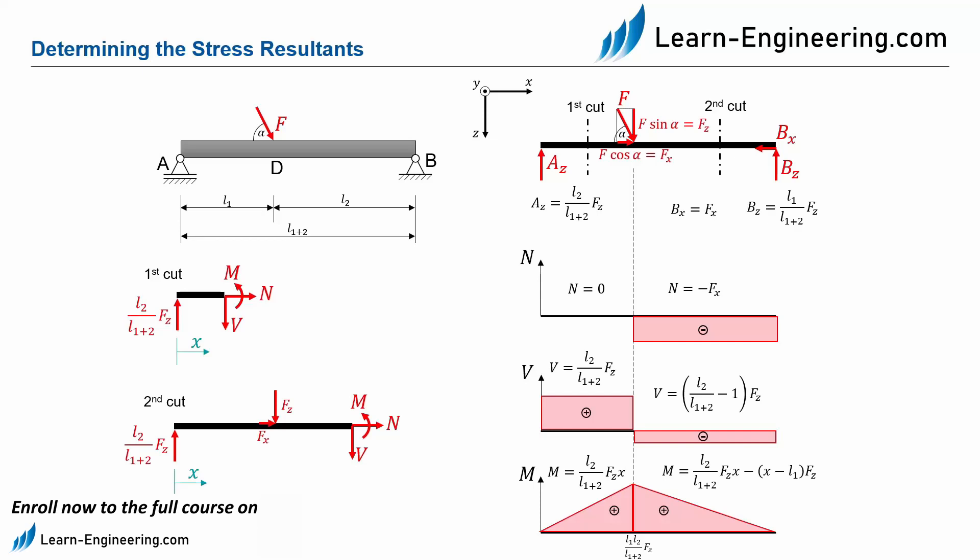Which leads to L2 times FZ minus L2 times FZ, which is equal to zero.